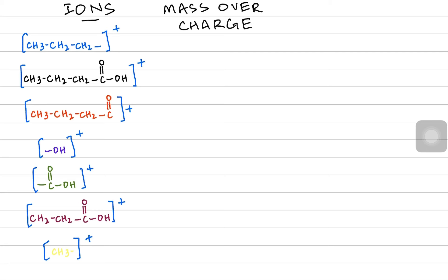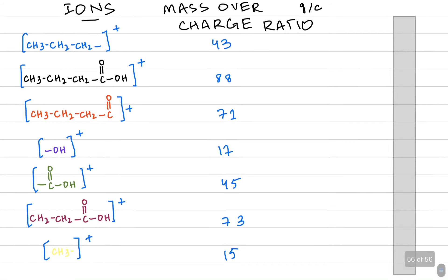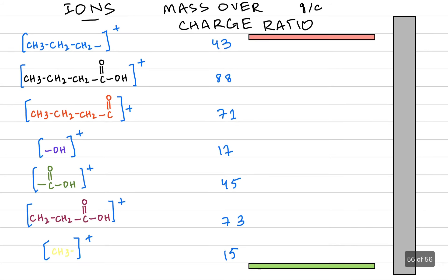When we talk about their mass over charge ratio, the charge on each fragment is literally the same, so the only thing different here is going to be the masses. For example 43 units, 88 units, 71 units. All these masses that you see here are not just masses but their mass over charge ratio.